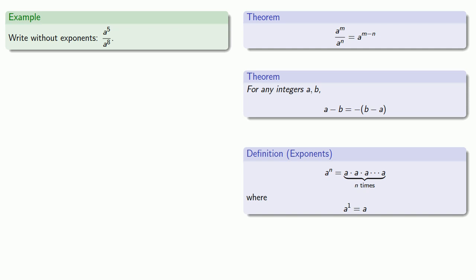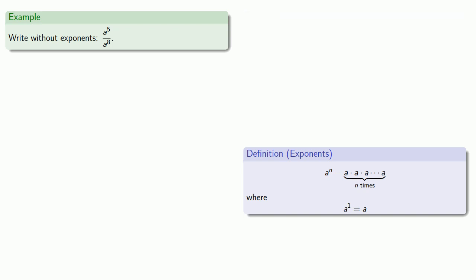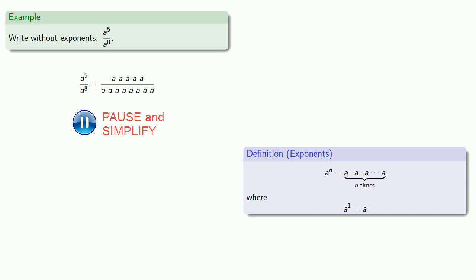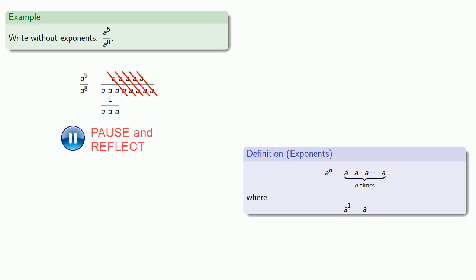To answer this question, let's rethink it. This time we'll ditch the theorem and focus only on the actual definition. So let's try to rewrite this without exponents. A to the fifth is five copies of a, and a to the eighth is eight copies of a. When we rewrite it without exponents, we get one over a times a times a — so let's write this with exponents: this is one over a to power three.